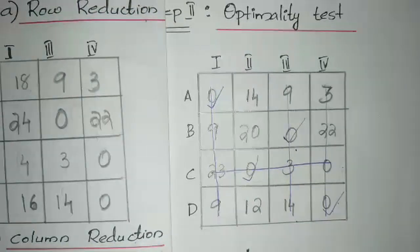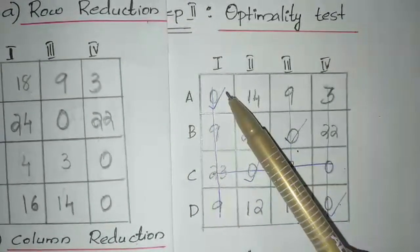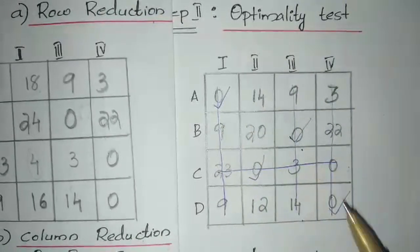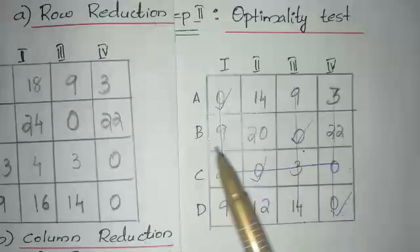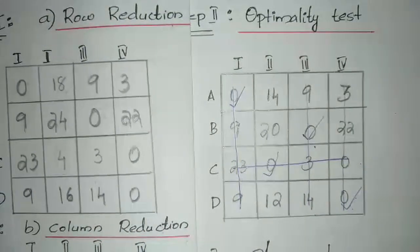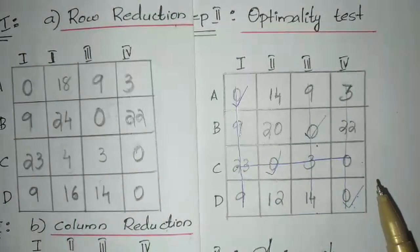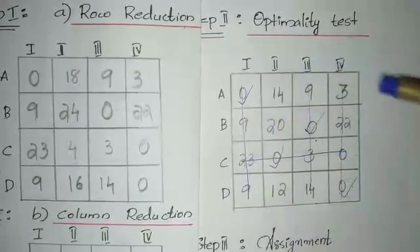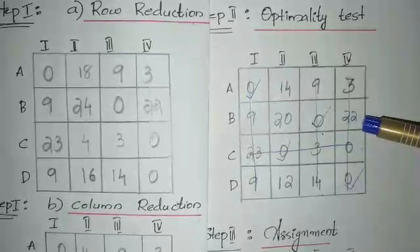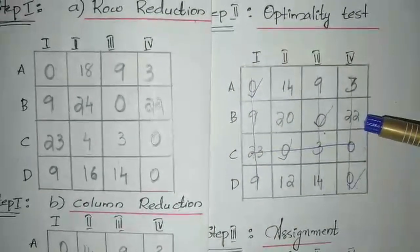Now check whether the number of tick-marked zeros is equal to the number of rows. If the number of zeros is not equal to the number of rows, identify the minimum value among the undeleted (uncovered) cells.